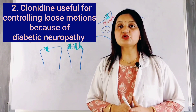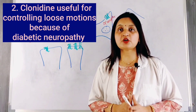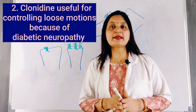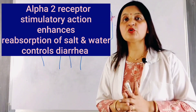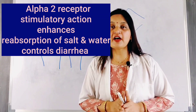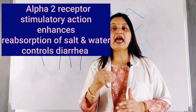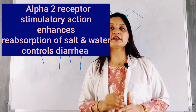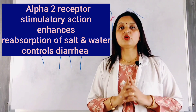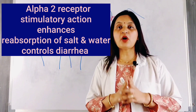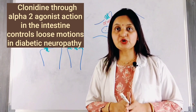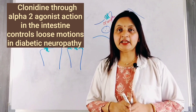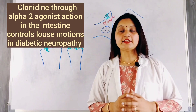Clonidine can also be used to control loose motions due to diabetic neuropathy. Alpha-2 receptors are expressed in the GI mucosa, and stimulation of these receptors enhances absorption of salt and water, helping to control diarrhea. Thus, clonidine through alpha-2 receptor-mediated stimulatory action helps control diarrhea in diabetic neuropathy.